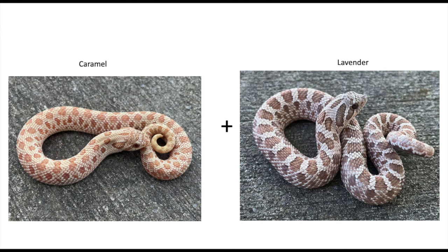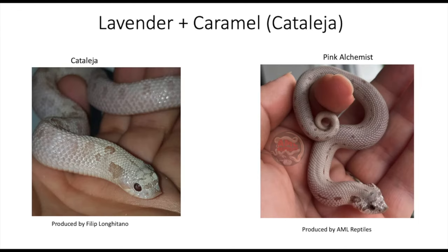Next combination is combining caramel with the lavender gene. I'm not really sure how to pronounce this name, but this was in my lavender video. You can see the regular version and then the version that has the anaconda gene with the reduced pattern, and as you can see they all have reduced head patterns as well.